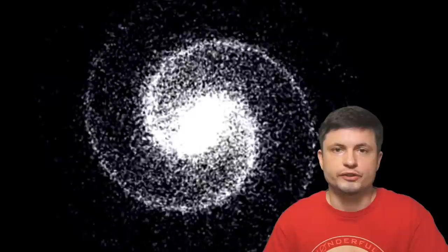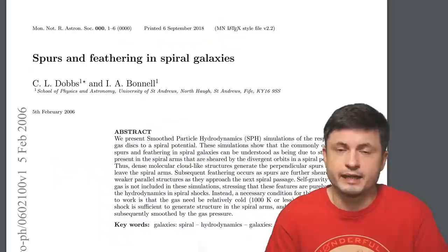So generally speaking, these types of feathers or these types of spurs are most likely used as basically bridges, with gas moving in and out of different arms and transferring from one place to another.